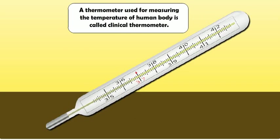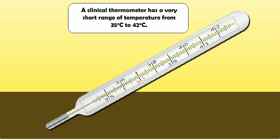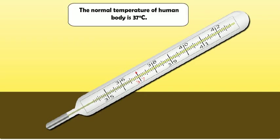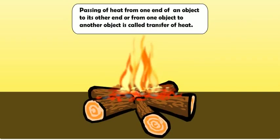A thermometer used for measuring the temperature of the human body is called a clinical thermometer. A clinical thermometer has a very short range of temperature, from 35 degrees Celsius to 42 degrees Celsius. It has a kink in its glass tube and usually has two temperature scales marked on it: the Celsius scale and the Fahrenheit scale. The normal temperature of the human body is 37 degrees Celsius.